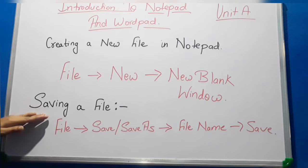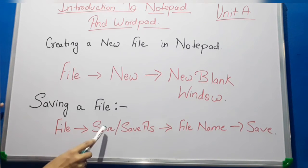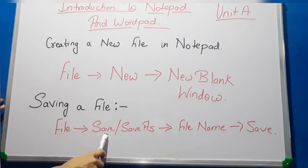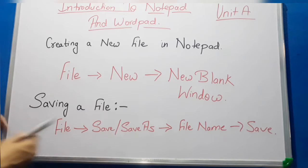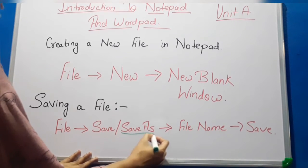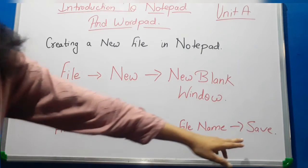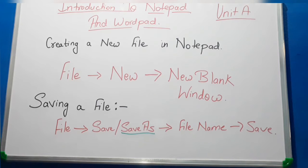For saving a file, you have to go to the File menu. There will be two options: the first is Save and the second is Save As. For saving a new file, you will click on the Save As option. You have to give the file a name, then click the Save button and your file will be saved.